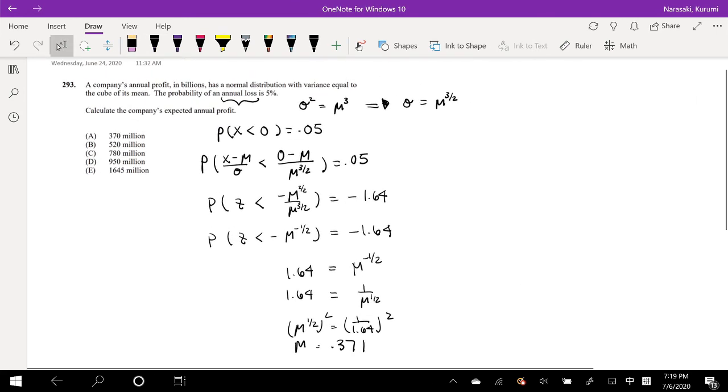And what is this in? Oh, this is in billions. So this is 0.371 billion, which is also equal to 371 million. That means this is approximately equal to 370 million, which is our answer A.